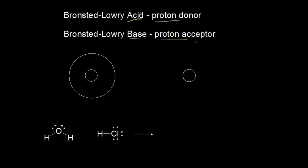Let's quickly review what this definition means by protons. Looking at this diagram, I'm going to draw the hydrogen atom, or the most common isotope. Hydrogen has one proton in the nucleus and one electron somewhere around the nucleus—a negative charge. We'd put its one valence electron there to represent the hydrogen atom, or the most common isotope.